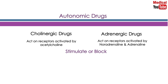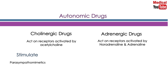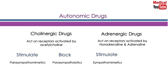Cholinergic and adrenergic drugs act by either stimulating or blocking receptors of the ANS. Cholinergic drugs that stimulate the receptors are called parasympathomimetics, and the ones that block the receptors are called parasympatholytics. Adrenergic drugs that stimulate the receptors are called sympathomimetics, and the ones that block the receptors are called sympatholytics.